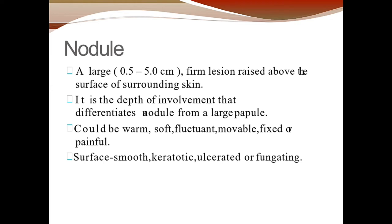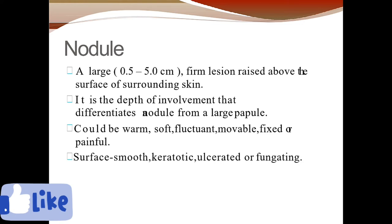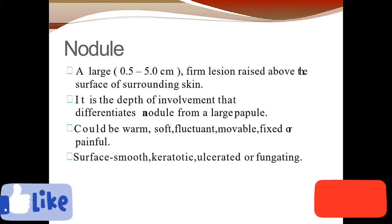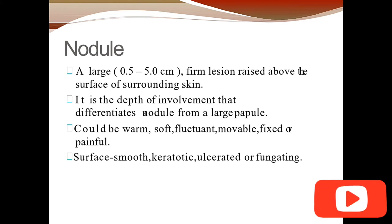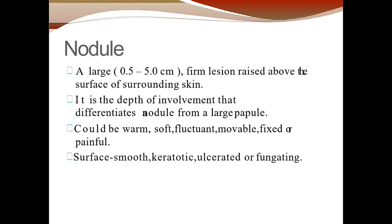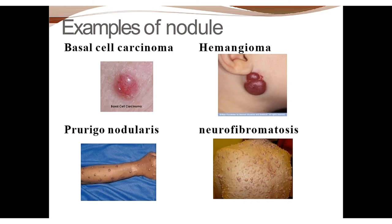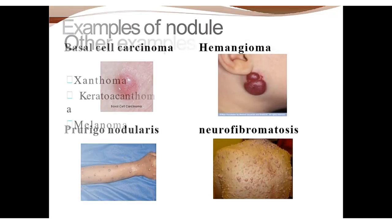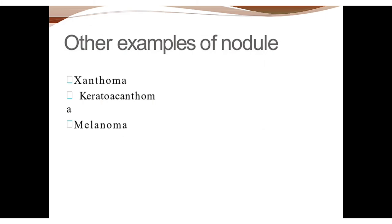A nodule could be warm, soft, or fluctuant — fluctuant means if you press on one side it moves to the other side. It may be movable or fixed, and may be painful. The surface may be smooth, keratotic with wrinkles or dead cells, ulcerated, or fungating with fungal growth. Examples include basal cell carcinoma, hemangioma, prurigo nodularis, neurofibromatosis, xanthoma, keratoacanthoma, and melanoma.